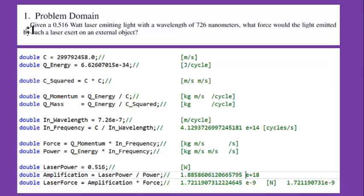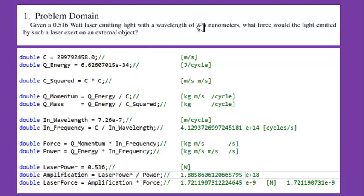Here is the problem we're going to solve: given a 0.516 watt laser emitting light with a wavelength of 726 nanometers, what force would the light emitted by such a laser exert on an external object? This is a simple physics problem which can be solved by taking the power and dividing by the speed of light to get the force. But that doesn't give you any intuition about what is going on under the hood. So here is my implementation of this problem in code.